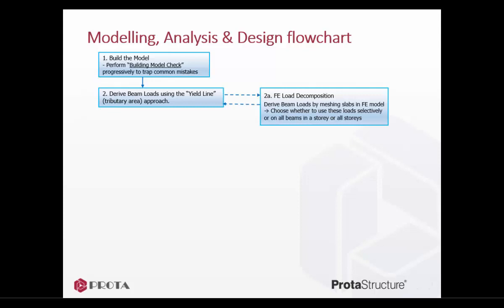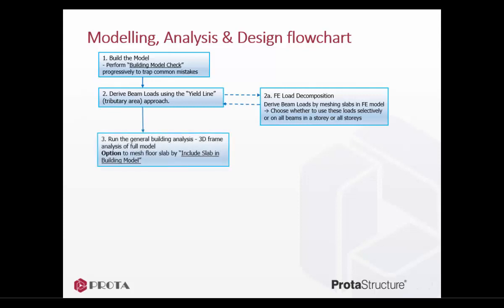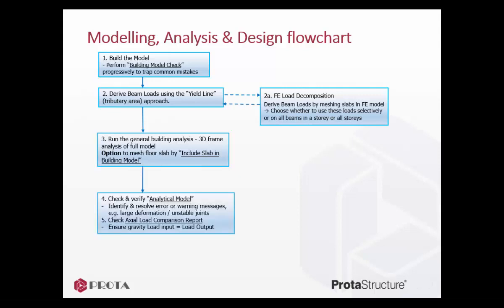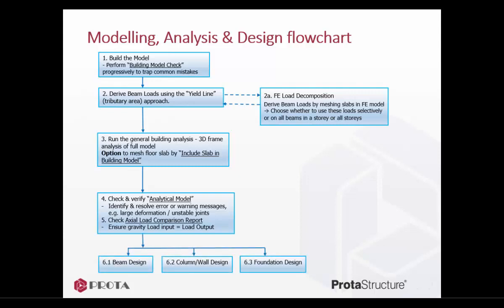The general building analysis can be run to generate the column, wall, and beam design forces. By default, floor slabs are not meshed in building analysis. There is an option to mesh slabs of all or selected stories. After building analysis is successfully completed, ensure you check and verify the analytical model. You must identify any error or warning messages such as large deformation or unstable joints. Check also that the deflection and member forces are reasonable. Check the axial load comparison report to ensure no gravity load is lost — that is, load input equals load output.